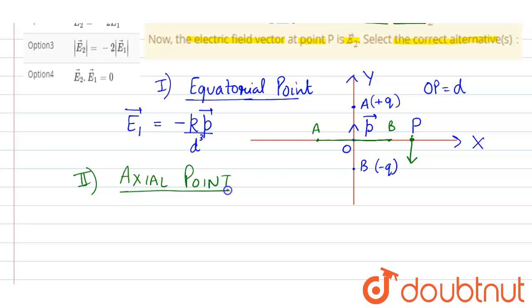And the formula for axial point will be electric field intensity E2 is equal to—here it is plus q and here it is minus q. Now the dipole moment direction is leftward. E2 will be equal to 2kp upon d cube.